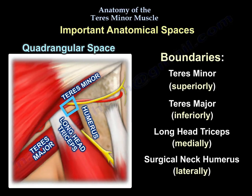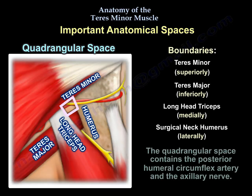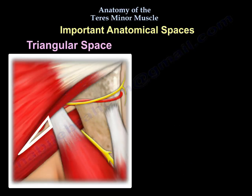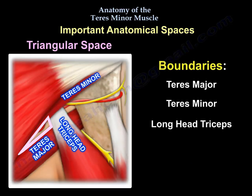The boundaries of the quadrangular space are the Teres Minor superiorly, the Teres Major inferiorly, the long head of the triceps medially, and the surgical neck of the humerus laterally. The quadrangular space contains the posterior humeral circumflex artery and the axillary nerve.